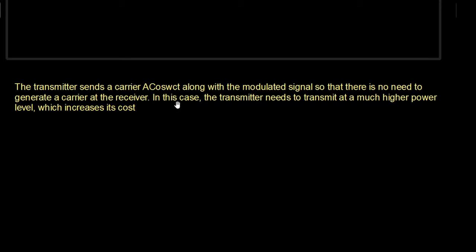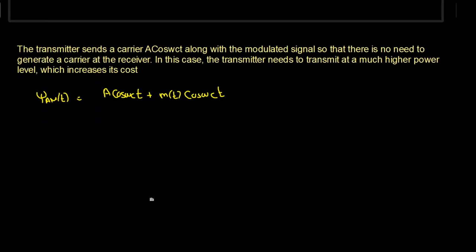In this case the transmitter needs to transmit at a much higher power level, which does increase its cost. But one complex and costly transmitter is better than multiple complex and costly receivers. So with the modulated signal m(t)·cos(ωct), we also send the carrier A·cos(ωct), giving us A·cos(ωct) + m(t)·cos(ωct).